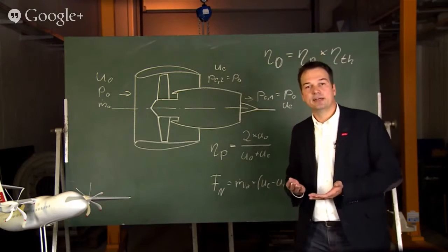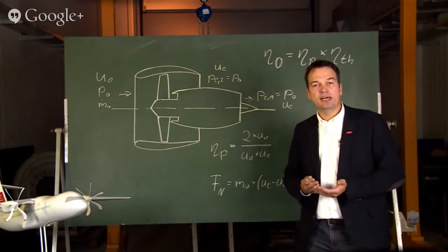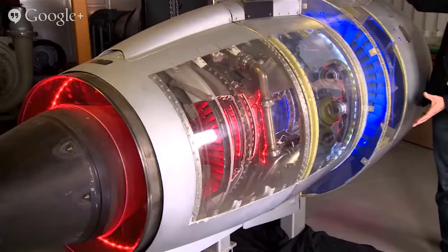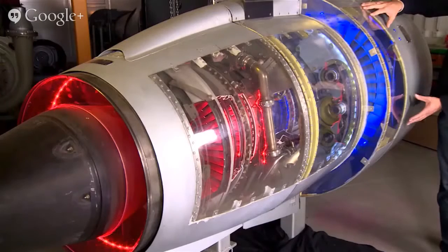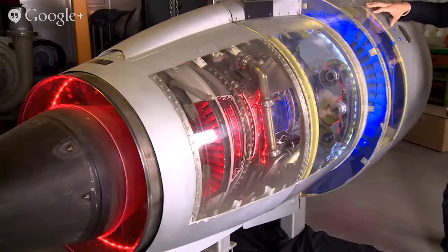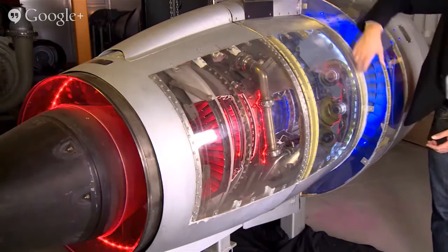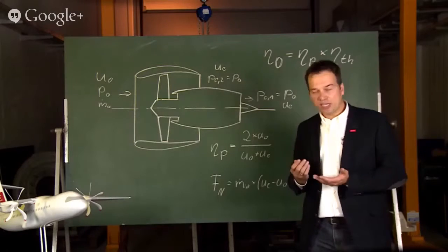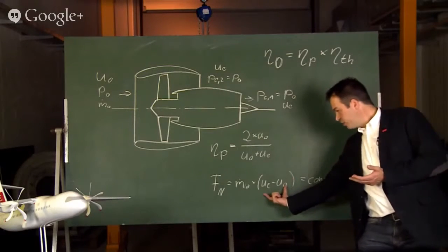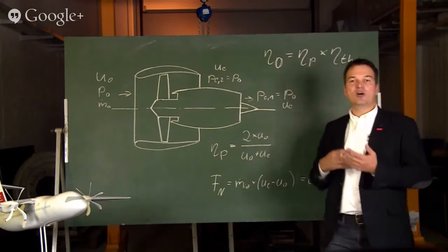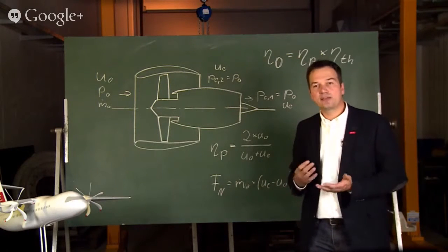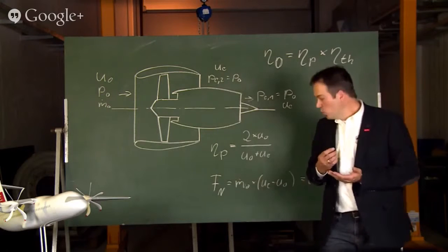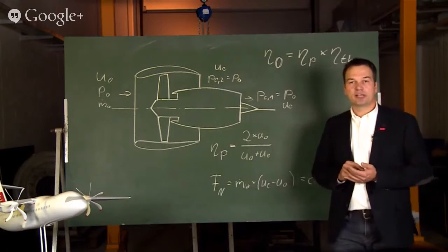But the tendency of lower the exhaust speed is the right one. That means that we would decrease the exhaust speed in order to increase the propulsion efficiency as far as possible and accept the reduction of this formulation here. And in order to get back the correct net thrust we need to increase the mass flow.